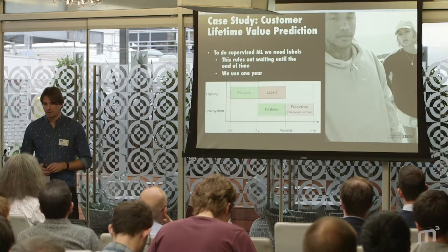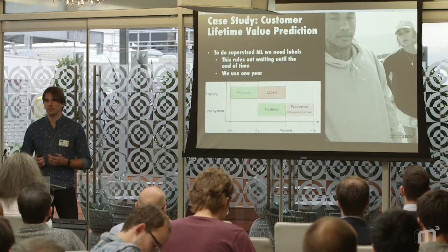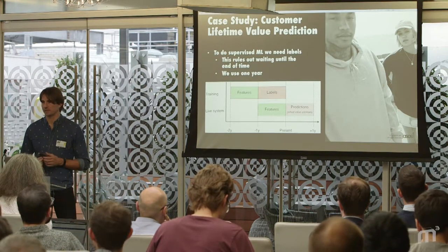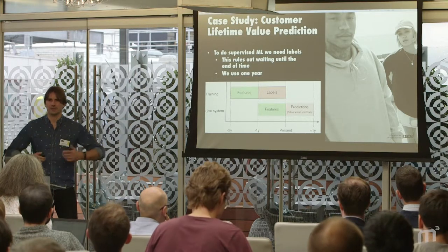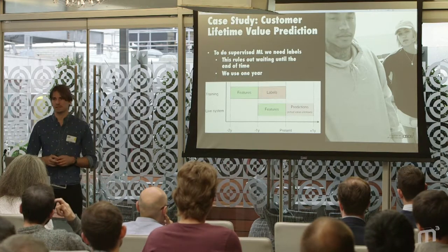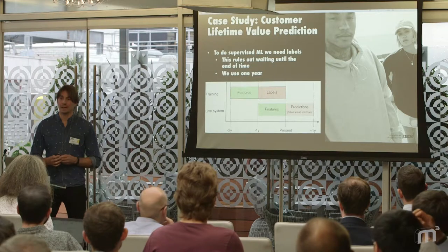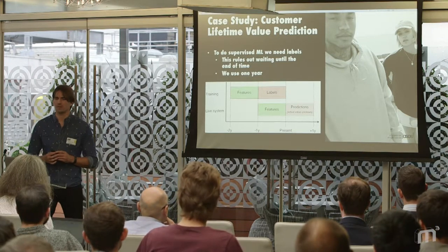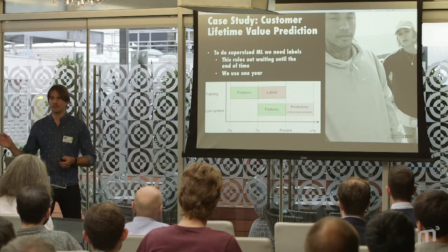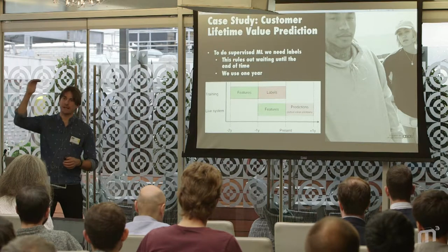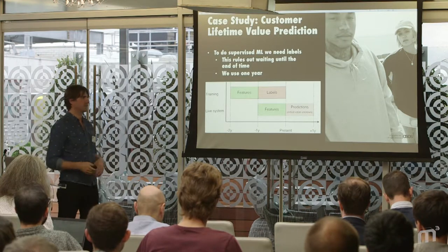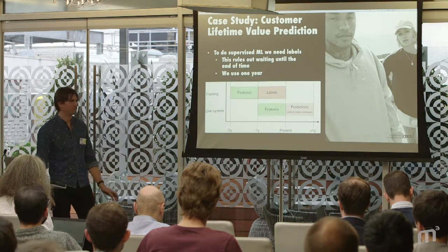Our model is a random forest with 135 handcrafted features — things like average spend last year or when you last visited the site, basically everything we could think of. It started to asymptote: we'd add a new feature and it made no difference, even clever ones. That's quite common in industrial machine learning projects.